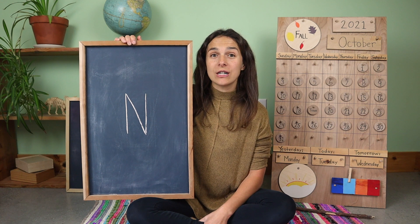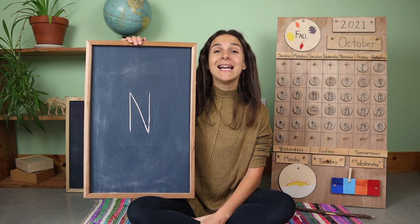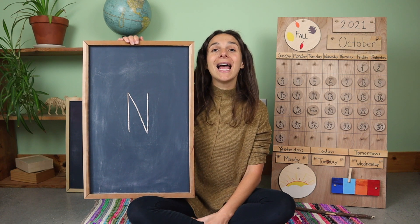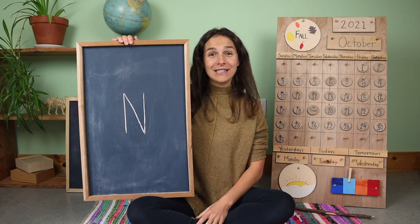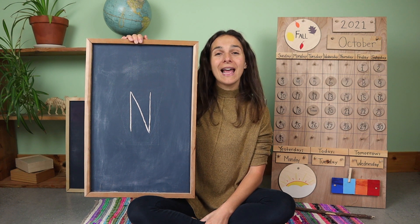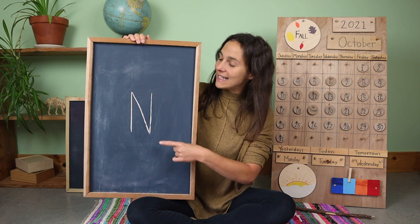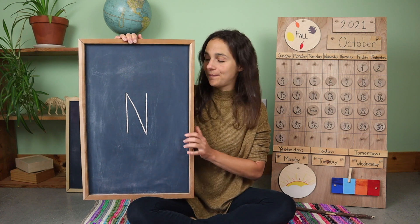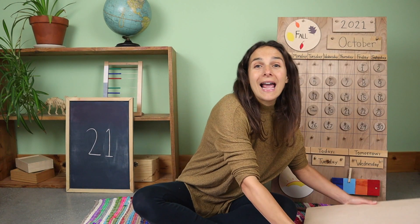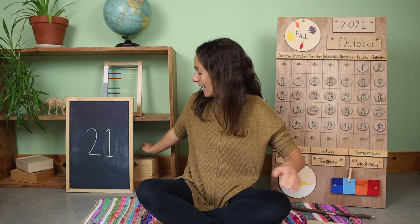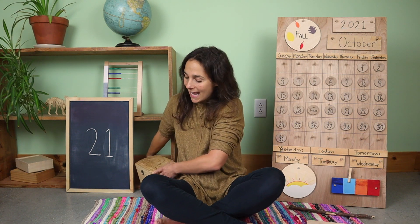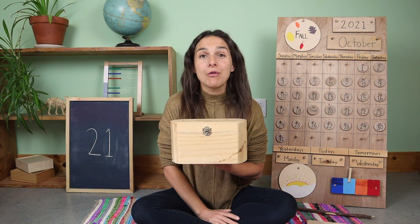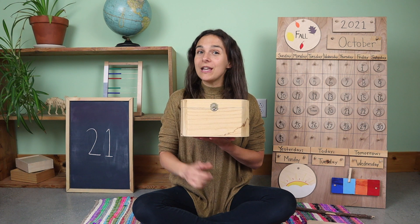Yesterday, we talked about this capital letter, which says N. Can you make that sound with me? N. And do you remember what letter this is called? N. This is a capital or uppercase N. N says N. I have a picture of something today that starts with the letter N. It's inside of this box, and I'll give you a few clues.